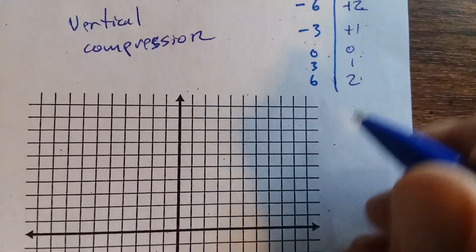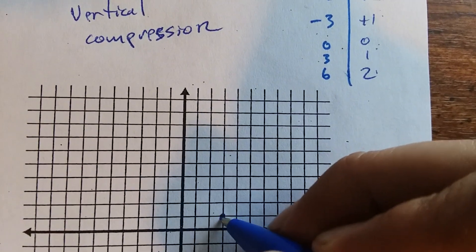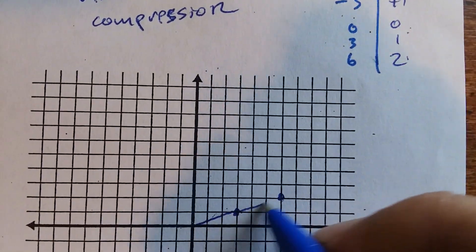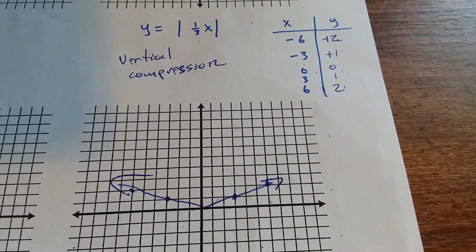Graph your points. 3, 1. 6, 2. And that's how it's going to look.